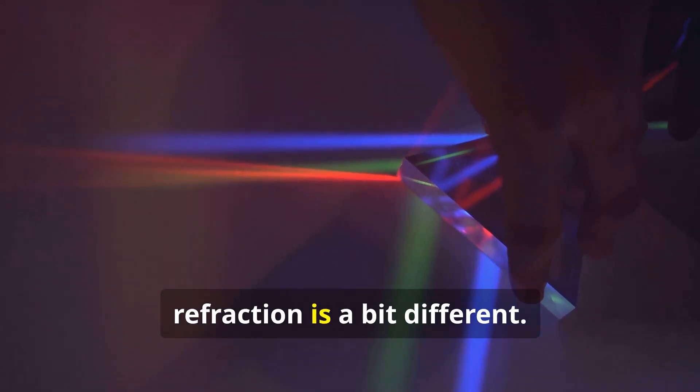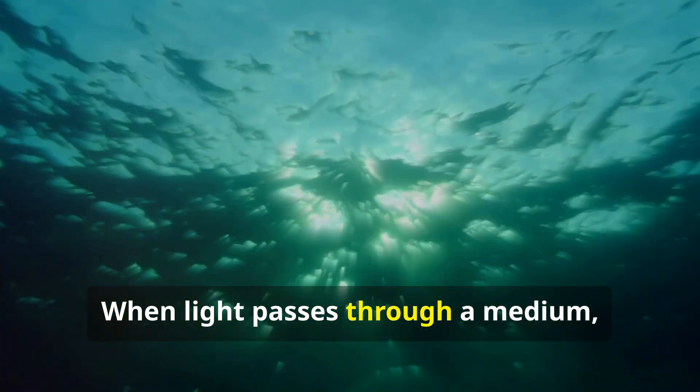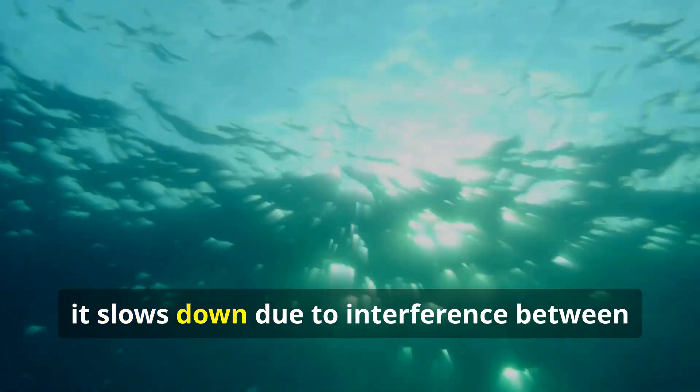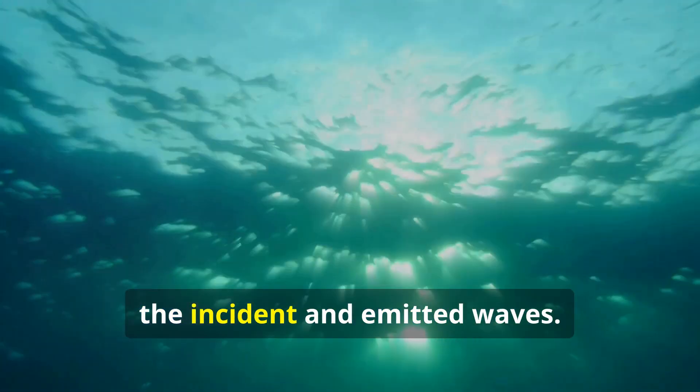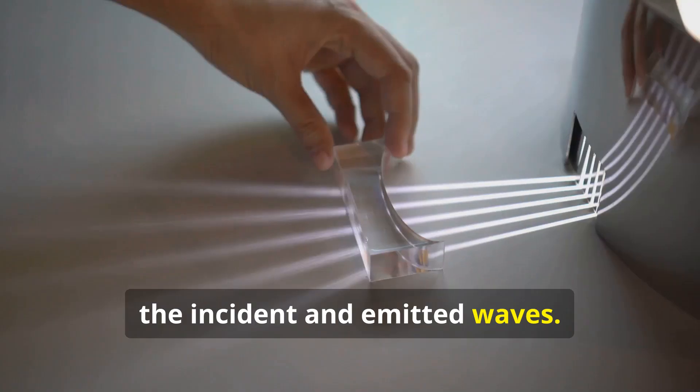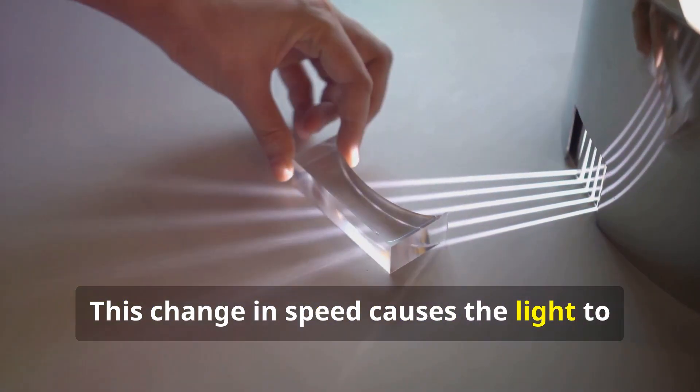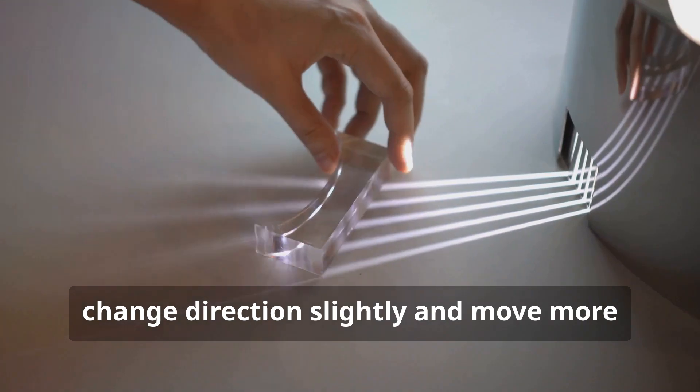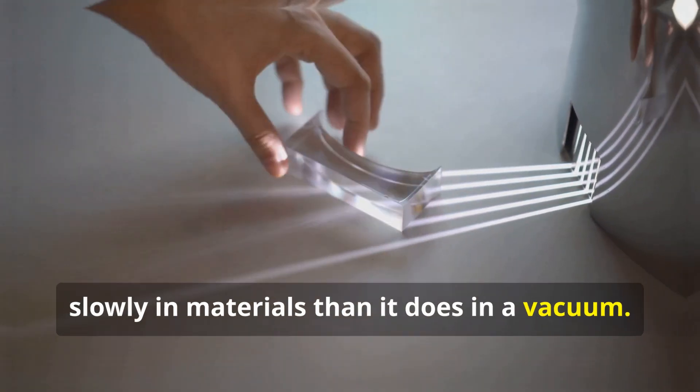Now, refraction is a bit different. When light passes through a medium, such as water, it slows down due to interference between the incident and emitted waves. This change in speed causes the light to change direction slightly and move more slowly in materials than it does in a vacuum.